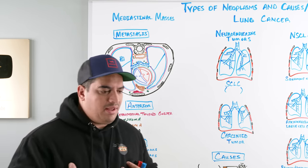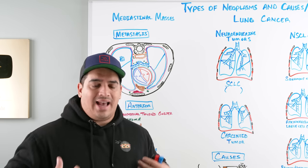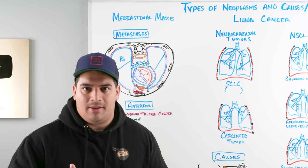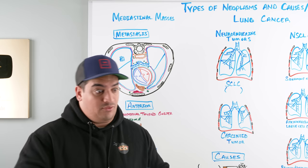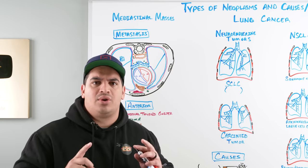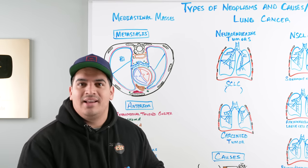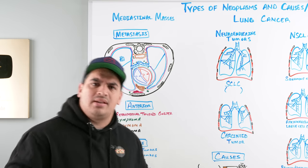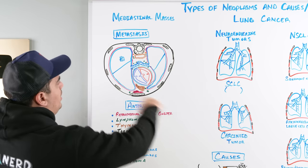When we talk about neoplasia within the chest, one important structure is the mediastinum — a cavity situated in the midline of the thoracic cavity. Masses can appear in the mediastinum and distort normal structures visible on a chest x-ray, so it's important to quickly associate what could be causing those masses based on the anatomy of the mediastinum.